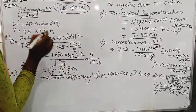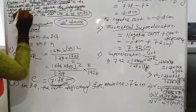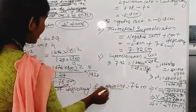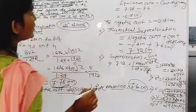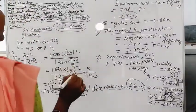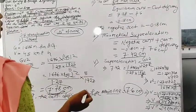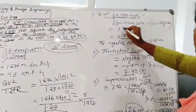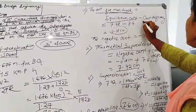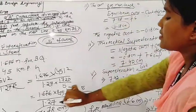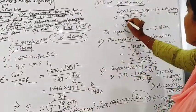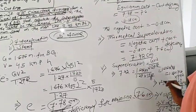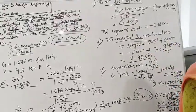The cant deficiency for the main line is 7.6 cm. The cant for main track = equilibrium cant minus cant deficiency = 7.78 − 7.6 = 0.18 cm.